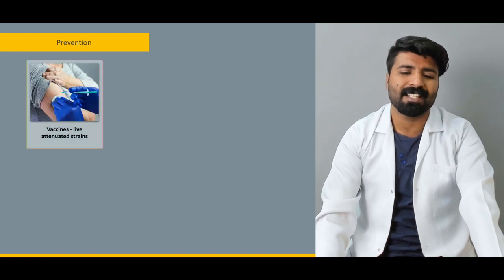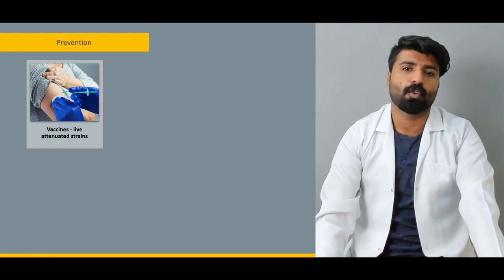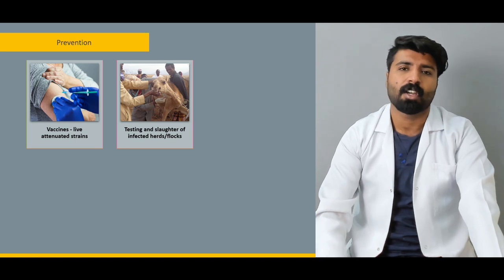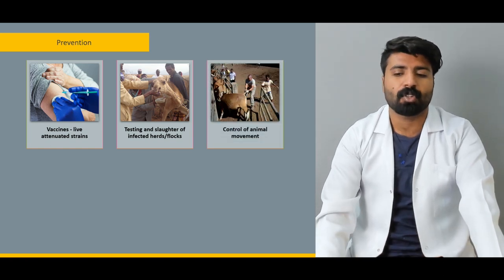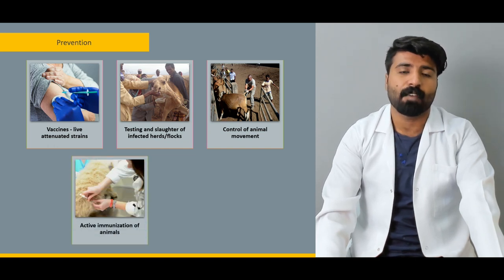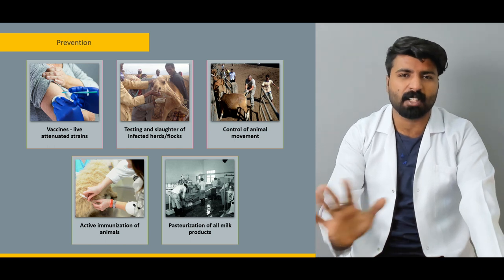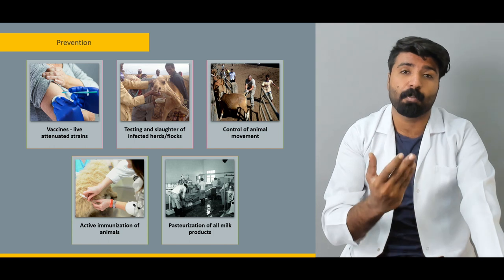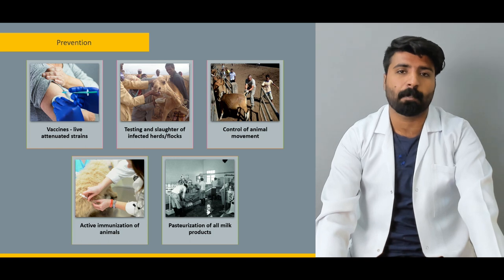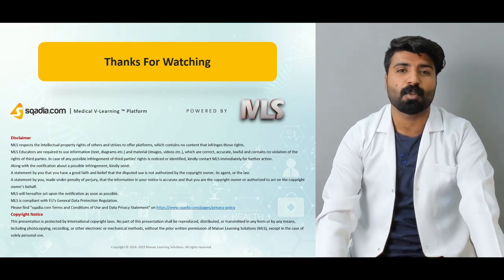Prevention of brucellosis involves: live attenuated vaccines to produce antibodies; regular testing and slaughter of infected herds and flocks; control of animal movements; active immunization of animals; and pasteurization of all milk products — heating milk to a certain temperature for a certain time to kill any Brucella organism present. Following these preventive methods will significantly reduce the risk of acquiring brucellosis.